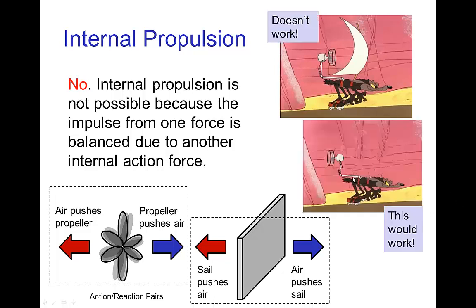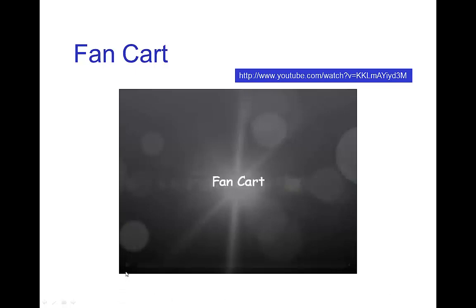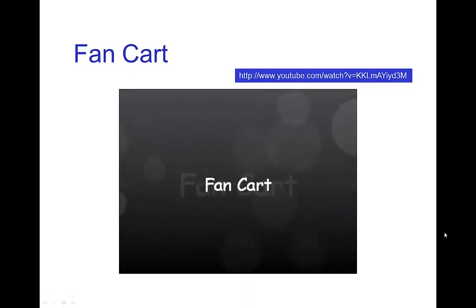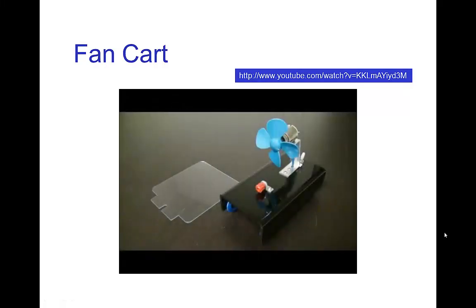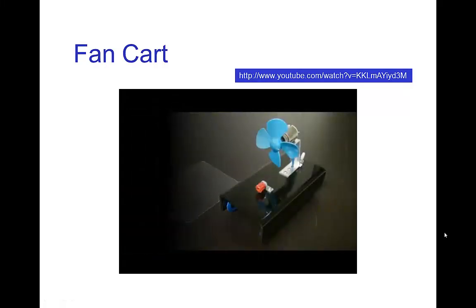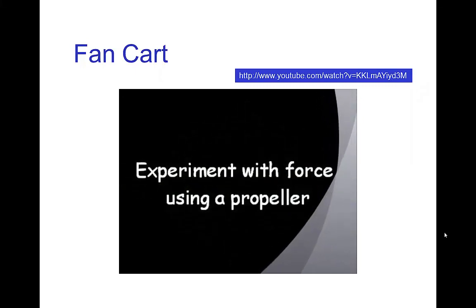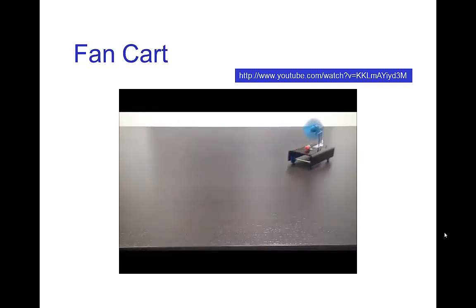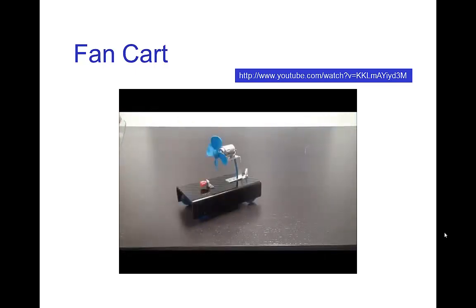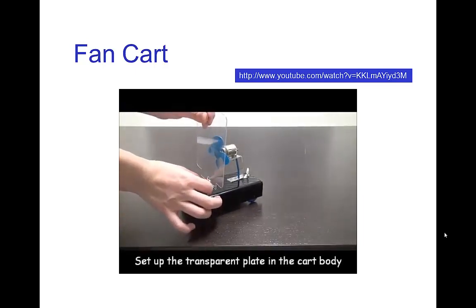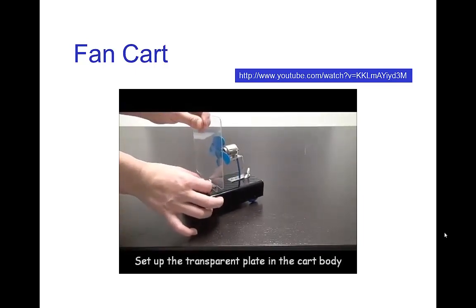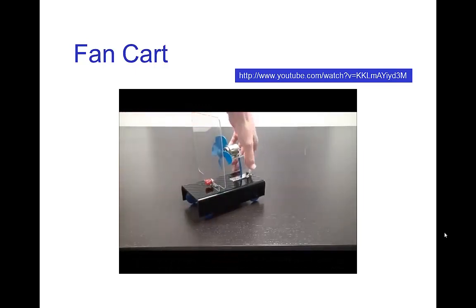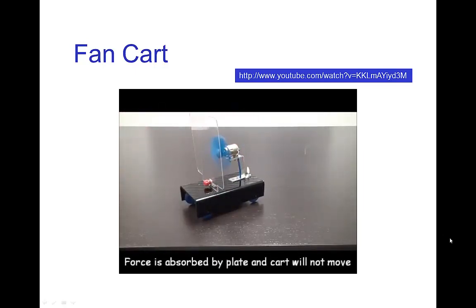Interestingly, if you simply got rid of the sail and pointed the propeller back the other way, that would work just fine. Let's do the experiment: take a little car with a propeller on it. First, just use the propeller — that works just fine, similar to an airboat used in the Everglades. Now add a fan pointed at the sail and turn it on — and it doesn't move.